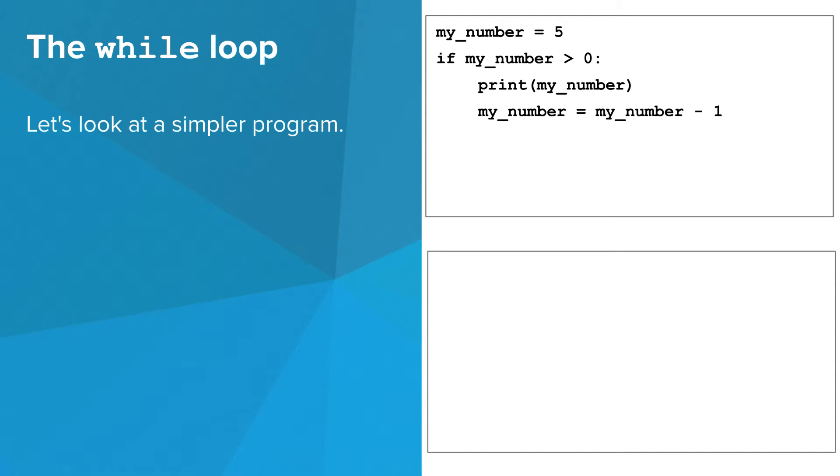Before we fix the guess the number program, let's look at a simpler program. The behavior of this program is fairly straightforward. Set a variable to 5, compare it against 0,